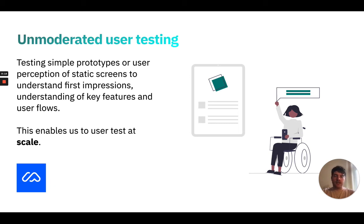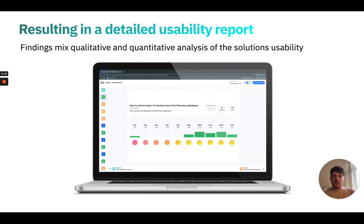Maze gives us an understanding of the user's first impressions as well as their understanding of key features and user flows. The results differ in that we can collect qualitative feedback but also get a more quantitative analysis of the solution's usability. This is a really interesting tool and helps us to scale our user testing to far more users than we could on one-to-one calls.